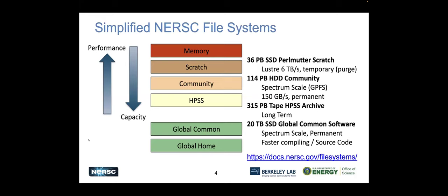That's the policy around the file systems. Now let me talk about the file systems themselves. We have several different layers of file systems, and they each have different levels of performance and capacity. In order to have really high performance, it costs a lot of money, so it's very hard to have a lot of capacity if you have very high performance. As you move down this tree, performance decreases but capacity increases.